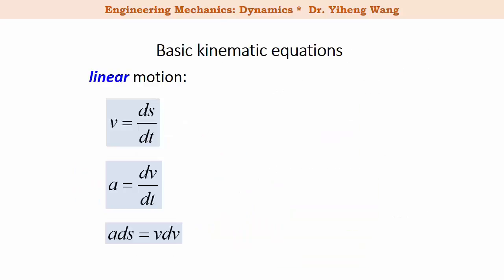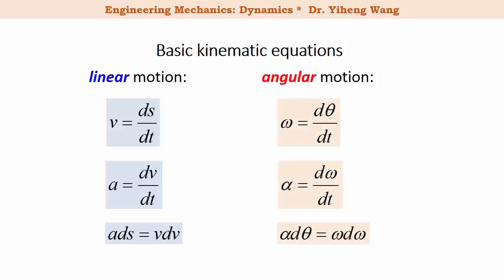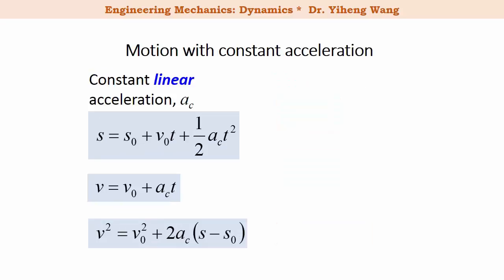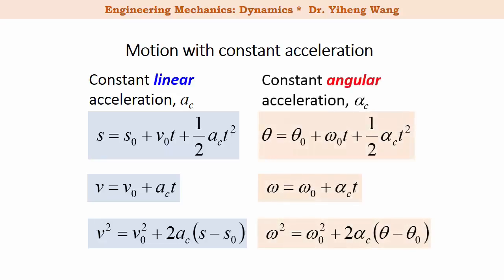These should look very familiar. As you recall, we learned about the three basic kinematic equations for linear motion, and now we have the three basic kinematic equations for angular motion, which have a very similar format. Just as there are three equations for linear motion with constant acceleration a_c, we can also derive three equations for angular motion with constant angular acceleration alpha_c.